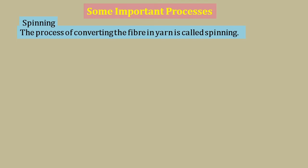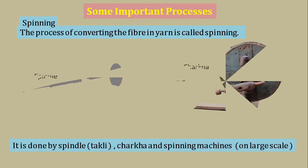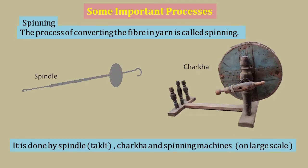The second process is spinning. This is the process of converting fiber into yarn. In this process, one end of the fiber is held and the other is spun or rotated using a tool. By doing so, the fiber is converted into yarn. Spinning is done using a spindle or charkha. On a large scale, spinning is done by spinning machines.